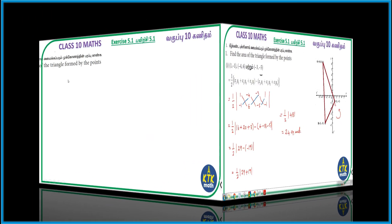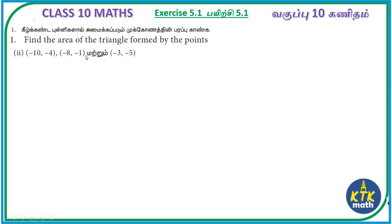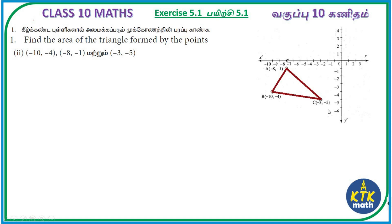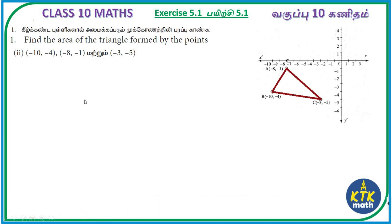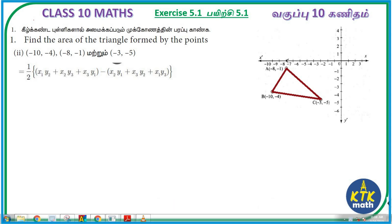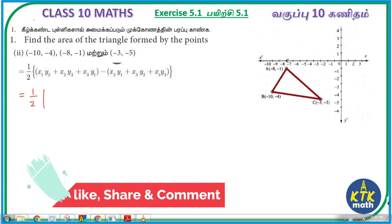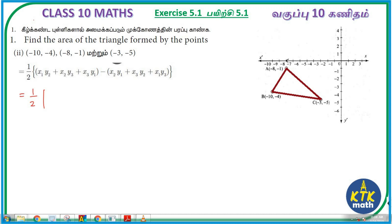Second question now. The second subdivision points are (-10, -4), (-8, -1), (-3, -5). So you can plot them. In this case, arrange them in anti-clockwise order: (-3, -5) first, then (-8, -1), then (-10, -4). As usual we have to write the formula.